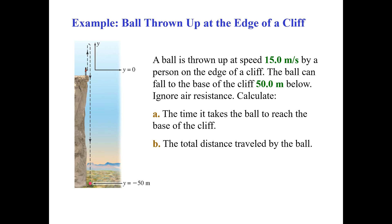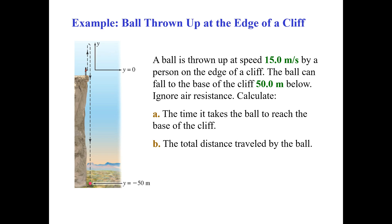Another example: 'Ball thrown up at the angle of a cliff.' A ball is thrown upward at 15 m/s by a person on the edge of a cliff. The ball can fall to the base of the cliff, which is 15 meters below. Ignoring air resistance, calculate: (1) the time it takes the ball to reach the base of the cliff, and (2) the total distance the ball travels. That's all for this lecture — thanks for watching.